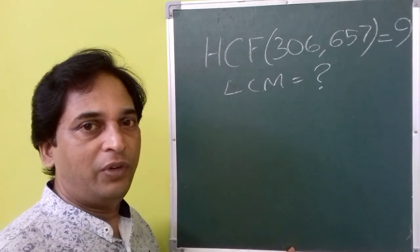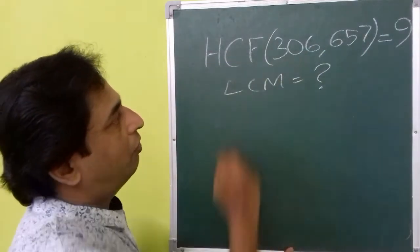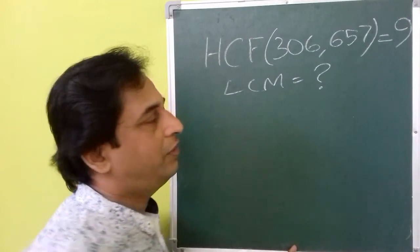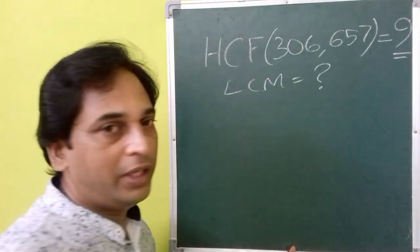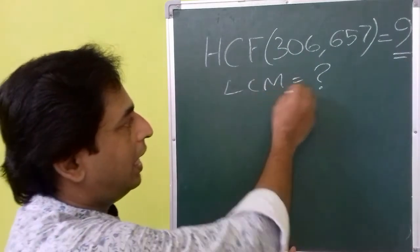In this question we are given the HCF of 306 and 657, which is equal to 9. Then we need to find what is the LCM.